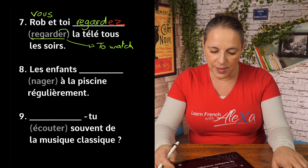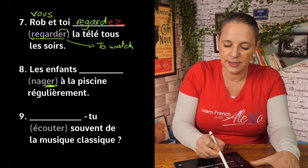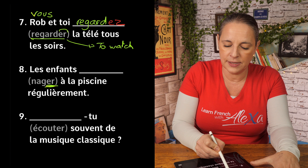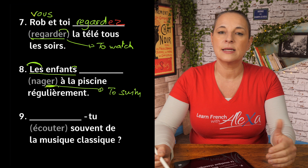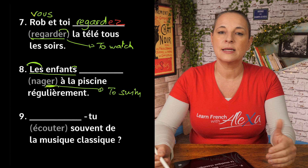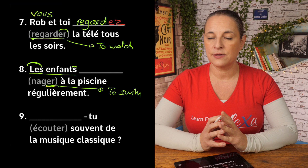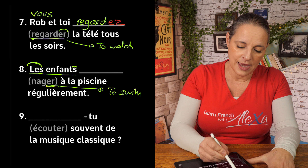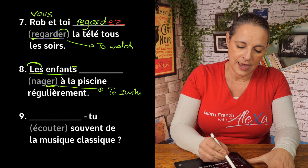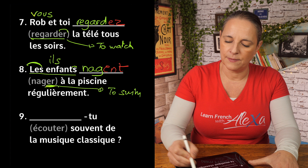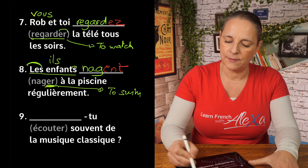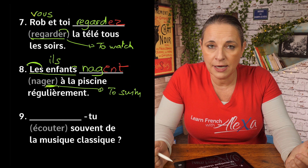Number eight: les enfants, with the verb nager — a first-group verb meaning to swim. Les enfants is plural — we know that because of les and the S at the end. If we replace les enfants with a subject pronoun, it would be 'they' — ils. The ending for ils is ENT: les enfants nagent. Les enfants nagent à la piscine régulièrement — the children swim at the swimming pool regularly.